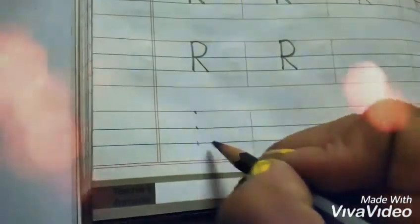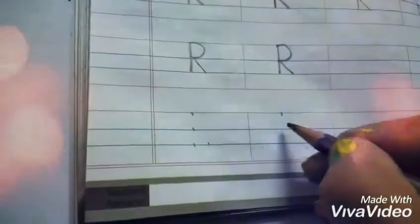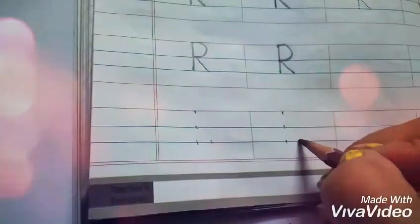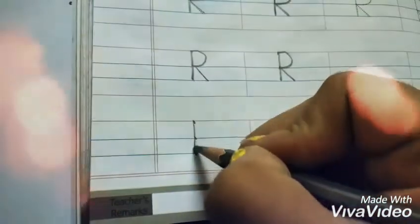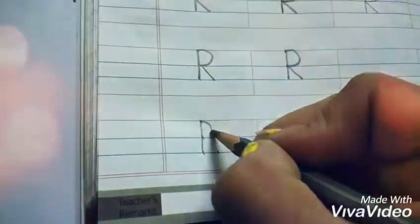One, two, three, and four. First of all, standing line. Then half curve. And slanting line.